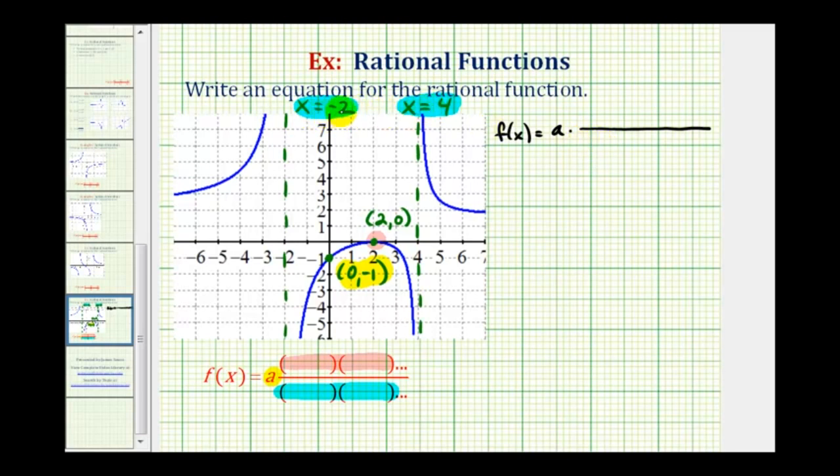So if x equals negative 2 is a zero of the denominator, we must have a factor of (x+2) in the denominator. And if x equals 4 is a zero of the denominator, we must have a factor of (x-4).